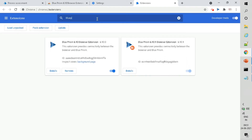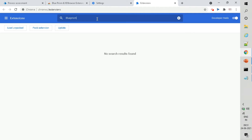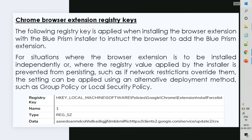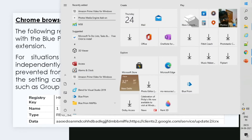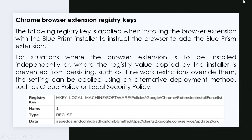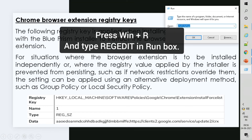Now move to the next method to install the extensions, which is using registry keys. We use this in the situation where the browser extension is to be installed independently, or where the registry value applied by the installer is prevented — such as by network restrictions that override them. Let's open the registry editor by typing regedit.